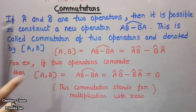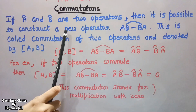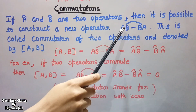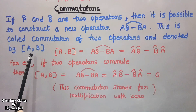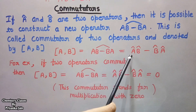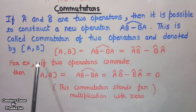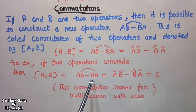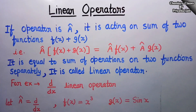Another term is the commutator. If A and B are two operators, it is possible to construct a new operator known as the commutator of the two operators. The commutator is denoted by [A, B] and equals AB − BA. If the two operators commute, their commutator will be equal to zero — meaning the commutator stands for multiplication by zero.